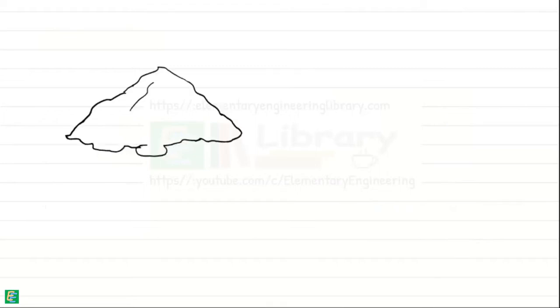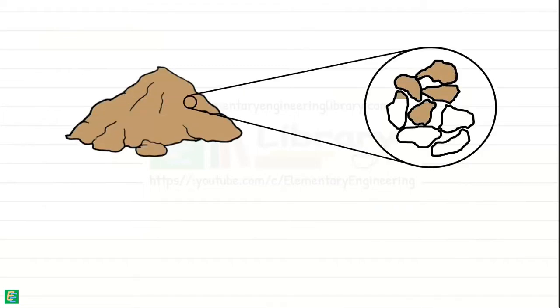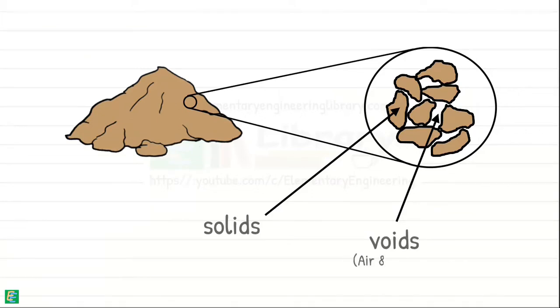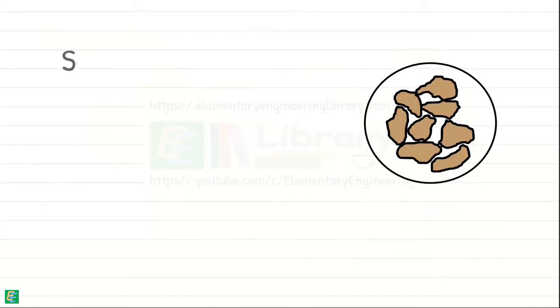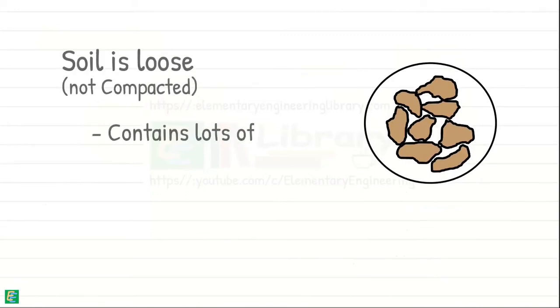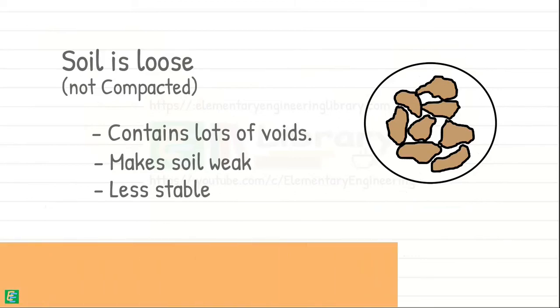As we know, soil is composed of solid particles and voids that may contain air and water. When soil is loose or not compacted, it contains lots of voids. These voids make soil weak and less stable. It does not provide much support.